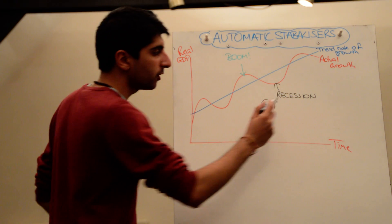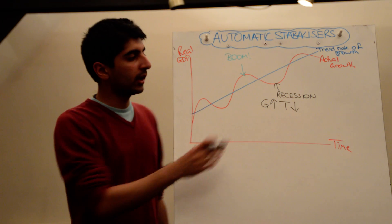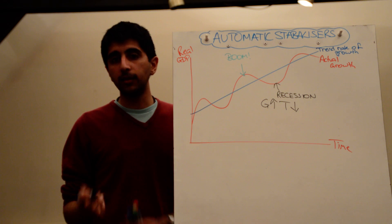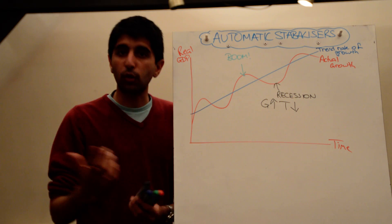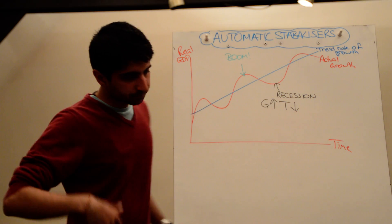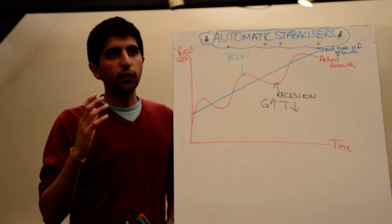Similarly, automatically taxation in terms of tax revenue collected by the government is going to fall in a recession because there are less people in work, so less people earning, going to pay less income tax.